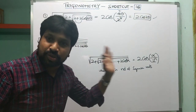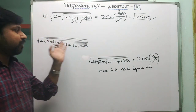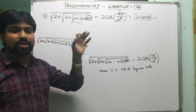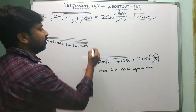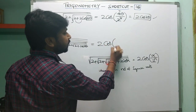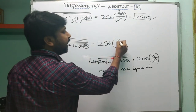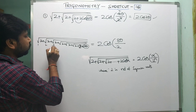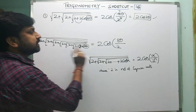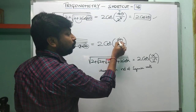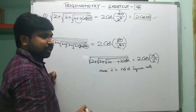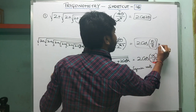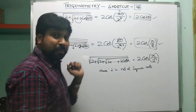We just confirmed we get 2cos(2θ). Now look at the longer question. Using the shortcut, this becomes a super easy question. For the 6-root example with cos(8θ): alpha is 8θ, and there are 6 square roots, so n=6, giving 2⁶ = 64. We cancel: 8θ / 64 = θ/8. So the answer is 2cos(θ/8). That is your answer using the shortcut.